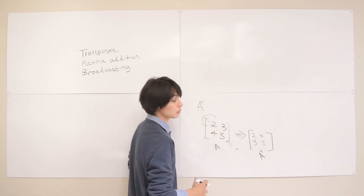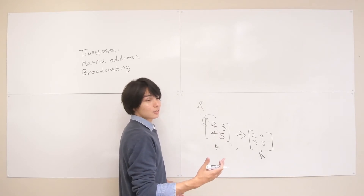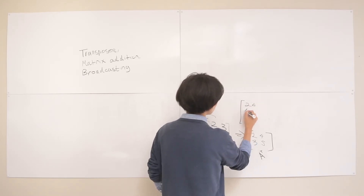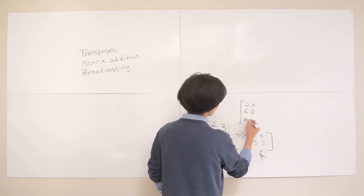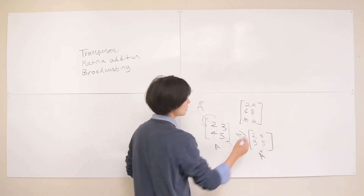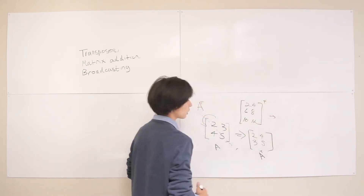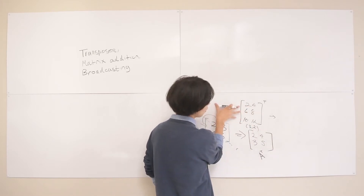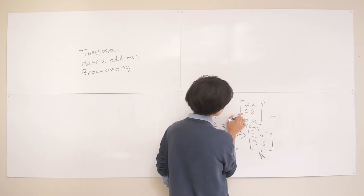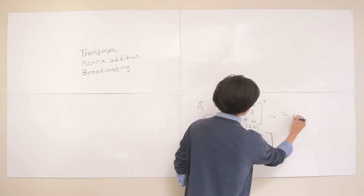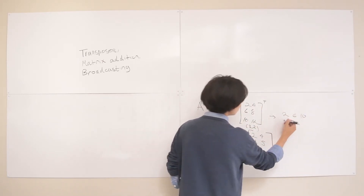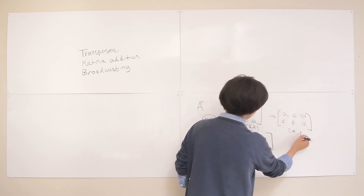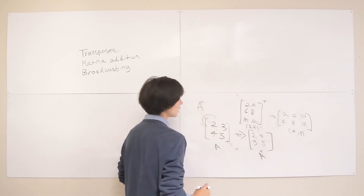You often want to transpose matrices that aren't square. Say we have a rectangular matrix [2, 4; 6, 8; 10, 12] — this is a 3 by 2 matrix. Taking the transpose is even more obvious because the result is a totally different shape — a 2 by 3 matrix. The first column, 2, 6, 10, becomes the first row; the second column, 4, 8, 12, becomes the second row. That's the same idea of flipping along the main diagonal.